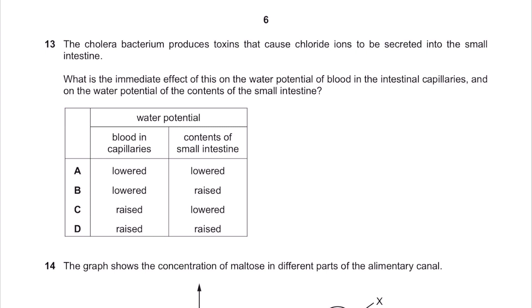13. The cholera bacterium produces toxins that cause chloride ions to be secreted into the small intestine. What is the immediate effect of this on the water potential of blood in the intestinal capillaries and on the water potential of the contents of the small intestine?